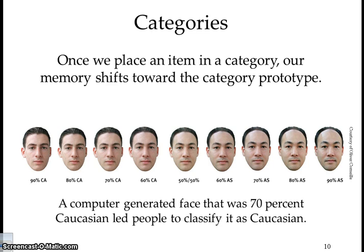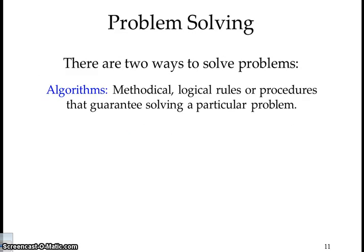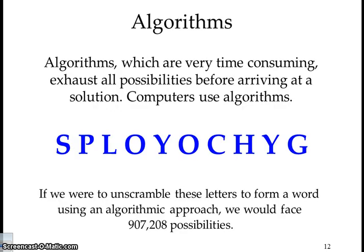For example, a computer-generated face that was 70% Caucasian led people to identify the person as Caucasian. When we look at problem-solving, we look at algorithms — logical rules or procedures that guarantee a solution to a particular problem. Because algorithms exhaust all possibilities, they can be very time-consuming. Computers can use algorithms.